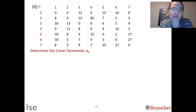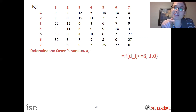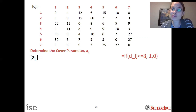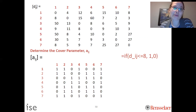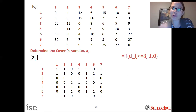We can use a simple if-then statement to do this — I recommend doing this in Excel for the homework problem. In Excel, you'd write: if d_ij is less than or equal to eight, put a one; otherwise put a zero. For example, from zone one to one it's a one because you can get there within eight minutes; from one to two also a one; but from one to three you cannot get there in eight minutes, so it's a zero. This gives us a binary A_ij parameter used to create the set covering constraints.